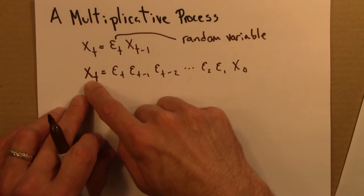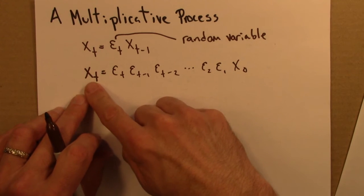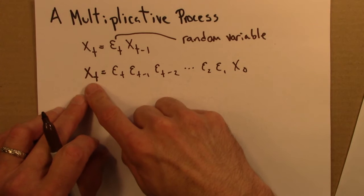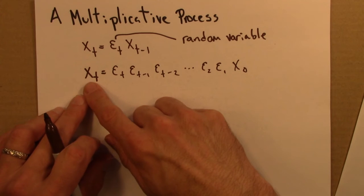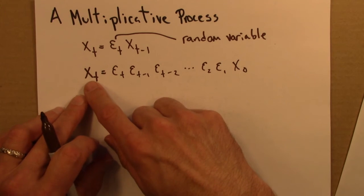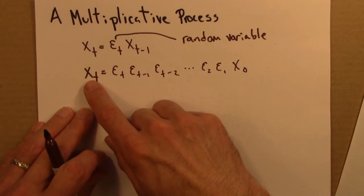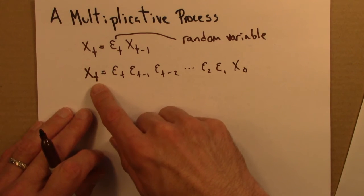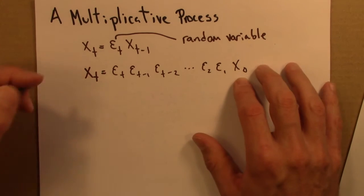and we end up with xt. And what I'd like to know is, what's the distribution of xt? xt is a random variable. How is it distributed? What sort of fluctuations about the mean do we see, for instance? So in order to start thinking about that, I'm going to take the logarithm of both sides of this equation.